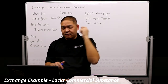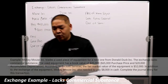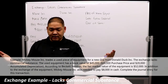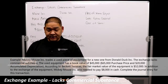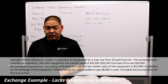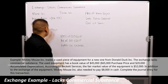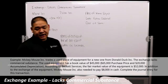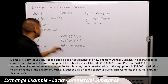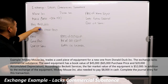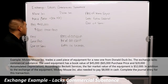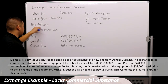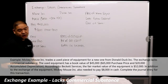In this example, Mickey Mouse Inc trades a used piece of equipment for a new one from Donald Duck Inc. The exchange lacks commercial substance, meaning at the end of the day they're both getting essentially the same thing. The used equipment had a book value of $45,000, from an original purchase price of $65,000 minus accumulated depreciation of $20,000. According to appraisal services, the fair market value is $52,000 — so there's a gain because the book value is $45,000 but it could be sold for $52,000.